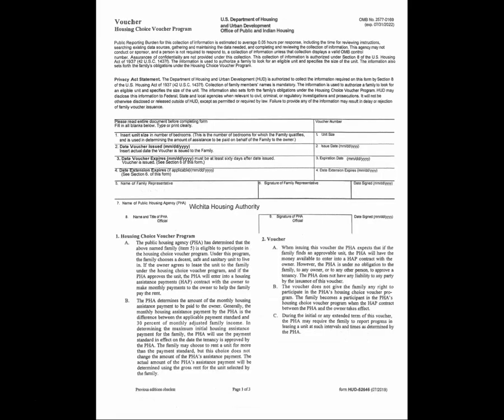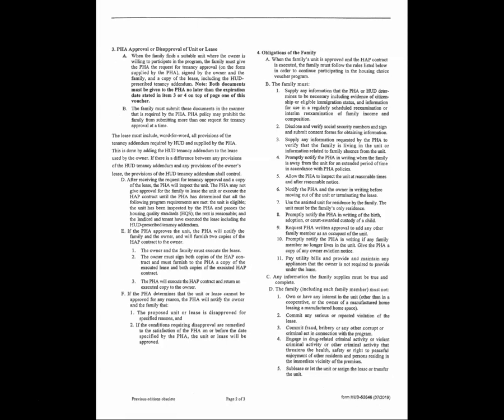Please read each form carefully, sign and date. The WHA and HUD require the documents be signed by you and your family members 18 and over. You are also required to read and sign the voucher. Sign your voucher and separate the white copy from the yellow copy. You will keep the original white copy of the voucher. Mail the yellow copy of the voucher and the packet of signed forms to the Wichita Housing Authority at 455 North Main, Wichita, Kansas 67202.